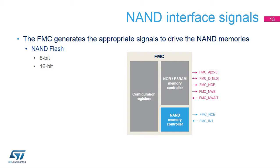The FMC generates the appropriate signals to drive NAND Flash memory. The address, data, and control signals are shared with the NOR PSRAM controller. The command latch enable, or CLE, and address latch enable, or ALE, signals of the NAND Flash memory device are driven by address signals from the FMC controller connected to address line 16 and address line 17 respectively. The ALE is active when writing to the address section, and the CLE is active when writing to the command section.